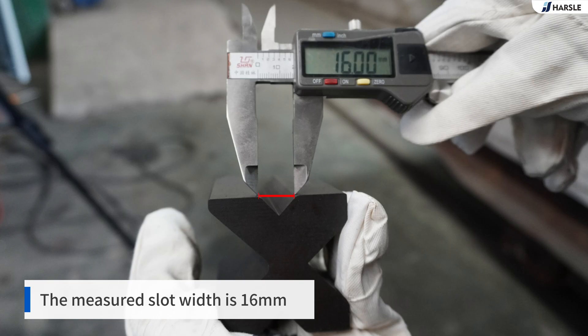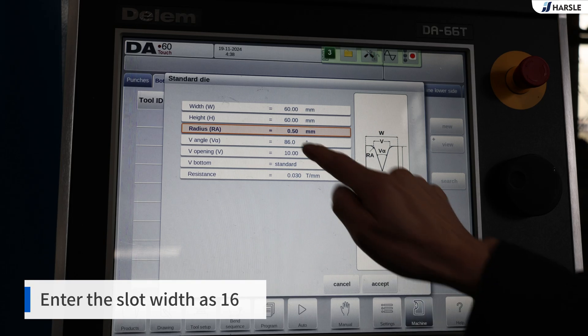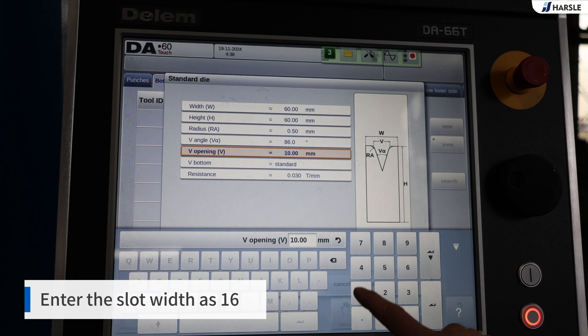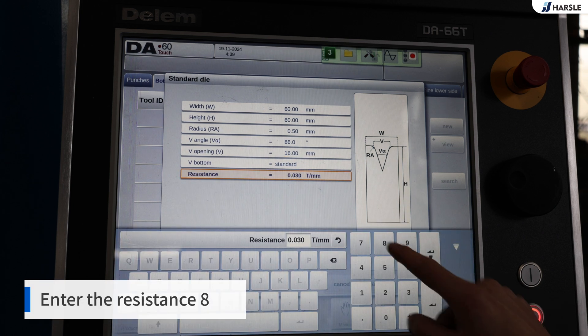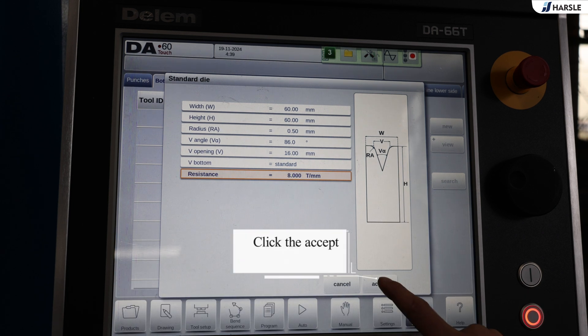The measured slot width is 16 millimeters. Enter the slot width as 16. Enter the resistance 8. Click the accept.